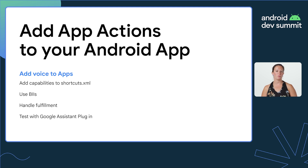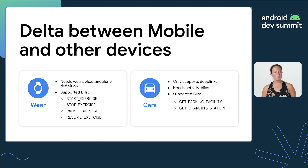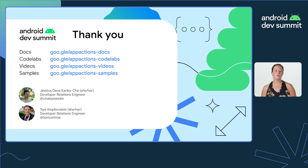We've covered a lot of details on how to add voice capabilities to your apps. Let's recap briefly. Giving users the ability to engage with your app through voice requires the use of built-in intents, the addition of your app's specific capabilities to shortcuts.xml, and defining how Assistant should handle fulfilling user queries — all of which can be tested quickly with the Google Assistant plugin. Assistant can also automatically leverage your App Actions to guide users to your app through brandless queries and app install suggestions, without any additional development work. And when developing for devices other than mobile, there are just a few differences to remember. If you're ready to start adding voice to your Android apps, check out the developer docs and codelabs to get started. Thanks for watching.